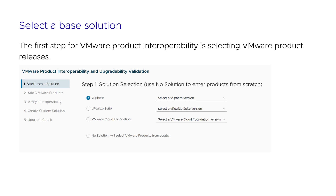Users can select releases from scratch by selecting the NoSolution checkbox. If users are using a base solution product such as vSphere and need to validate interoperability with other VMware products, it will be easier to start from the existing solution product. The tool provides options to select vSphere releases and other VMware solution product releases. If users need to validate the interoperability of custom solutions, selecting the MySolution checkbox will provide a way to start with their custom solution version releases. Use the Add VMware Products button to move to the next step.